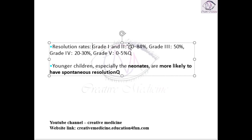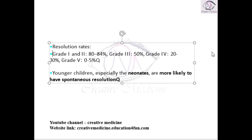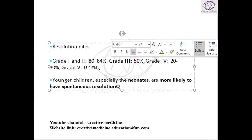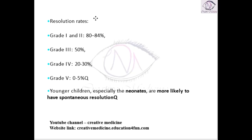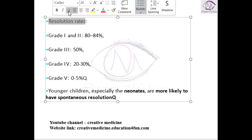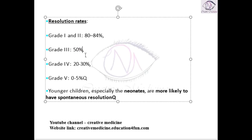The resolution rates based on grade: if the child has grade 1 and grade 2 reflux, it resolves in 80 to 84 percent. If the child has grade 3 reflux, it resolves in 50 percent of patients. If the child has grade 4 reflux, it resolves in 20 to 30 percent of patients. If the child has grade 5, it resolves in 0 to 5 percent of cases.